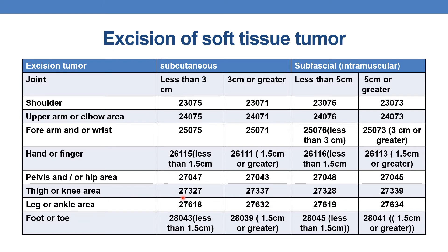Coming to thigh or knee area for excision of soft tissue tumor. For subcutaneous soft tissue tumor: if less than 3 centimeters, CPT is 27327; if 3 centimeters or greater, it is 27337. For excision of intramuscular soft tissue tumor of thigh or knee area: if less than 5 centimeters, CPT is 27338; if 5 centimeters or greater, it is 27339.